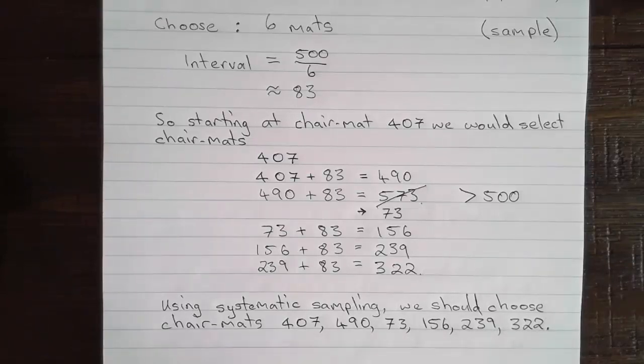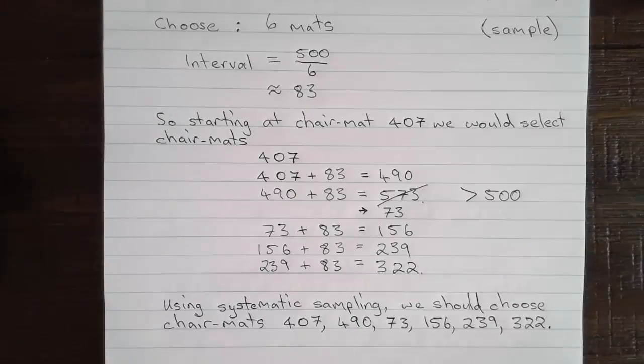Checking that we have 1, 2, 3, 4, 5, 6 chair mats like we were asked to find. So in this question, we've used systematic sampling, which we remember is choosing a sample using regular intervals in a list.